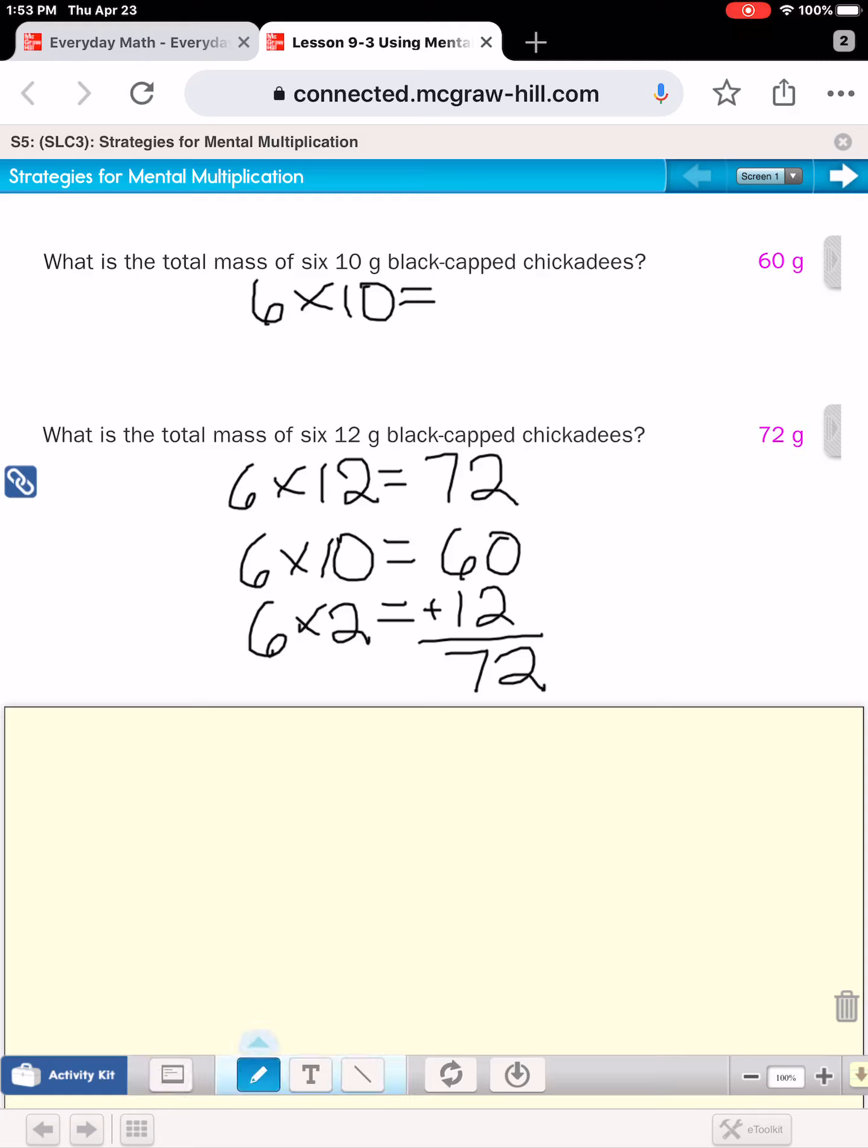Now you don't have to break 12 up into 10 and two. You could break it up however you would like that's easy to do mentally. So you could also break 12 into six and six. In that case, you would have six times six plus six times six. Six times six is 36. Six times six, again, 36. And if you add those two products, you would still be left with 72. So when we had this problem, six times 12, we took the harder factor 12 and broke it up into two easier numbers, either 10 and two or six and six.